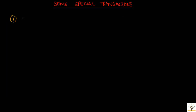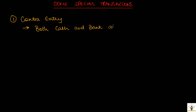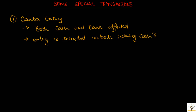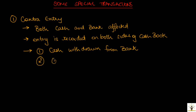The first special transaction is the contra-entry. A contra-entry is a transaction in which both cash and bank balances are affected at the same time — one balance increases and the other balance decreases. Hence, the transaction is recorded on both sides of the cashbook. There are two types: first, cash is withdrawn from bank, where cash is increasing and bank balance is decreasing; and second, where cash is deposited into bank, where bank is increasing and cash is decreasing.